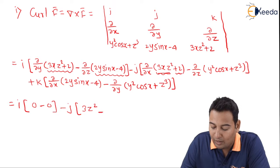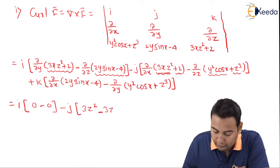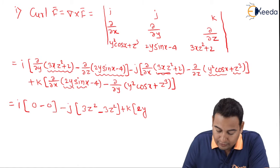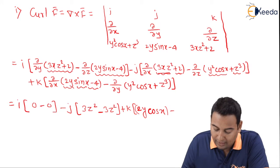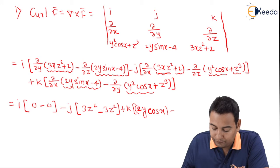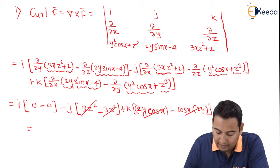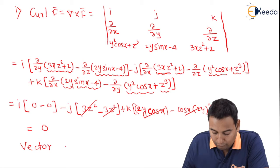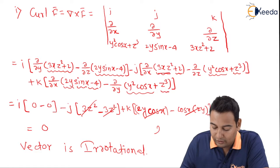For the k component: ∂/∂x(2y sin x − 4) gives 2y cos x, and ∂/∂y(y² cos x + z³) gives 2y cos x. These cancel, giving zero. Since all components equal zero, curl of F bar equals zero, therefore the vector is irrotational. First part of the solution is done — two marks secured.